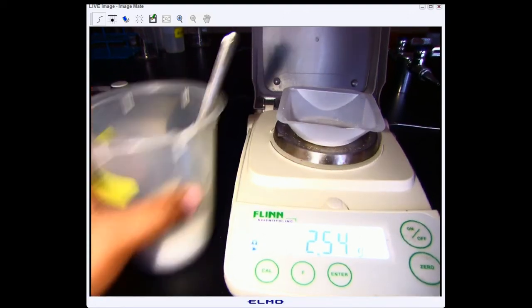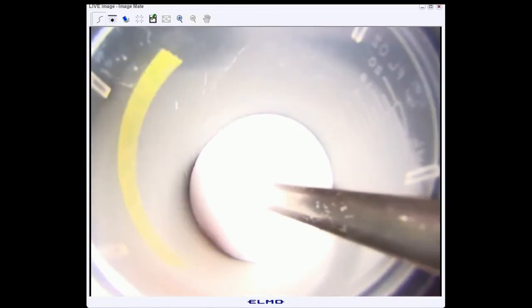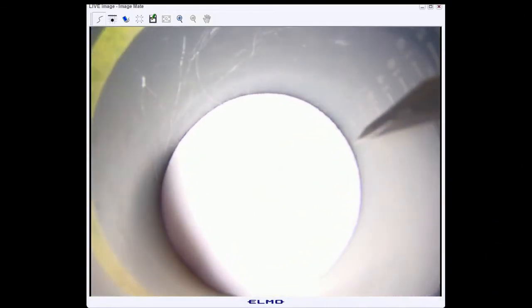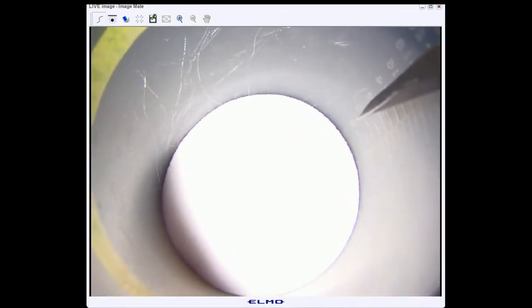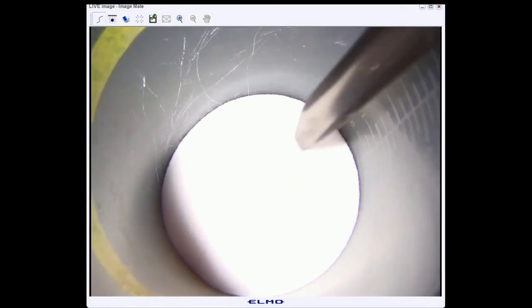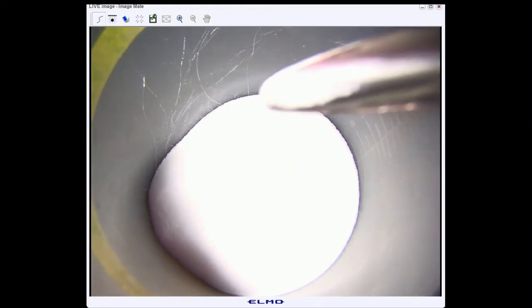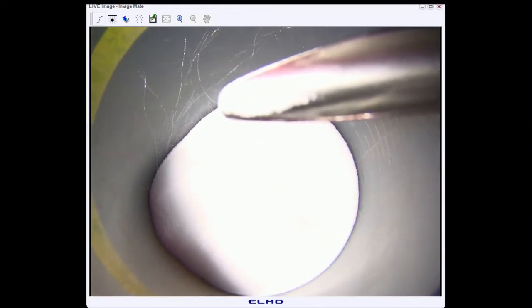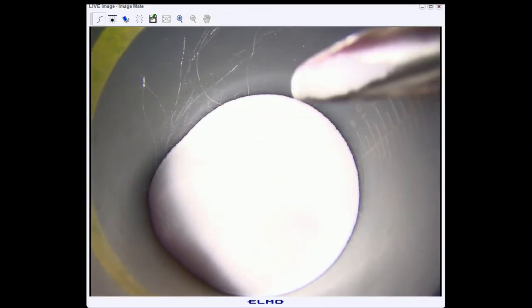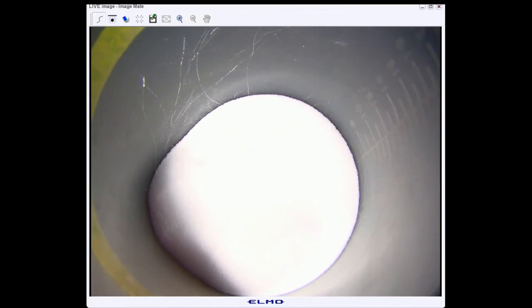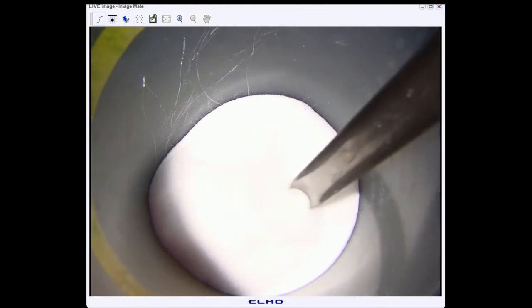Before we move on to our next step, let's get a close look at that baking soda. All right, so our baking soda is a solid. As you'll notice, it's white and it is very fine. So a very fine powder.